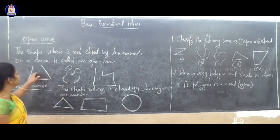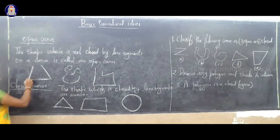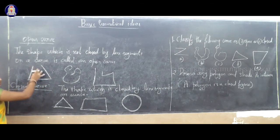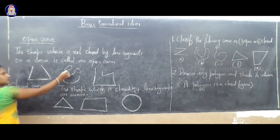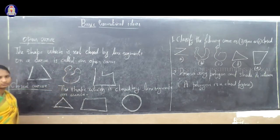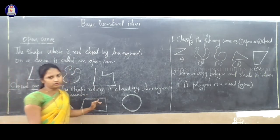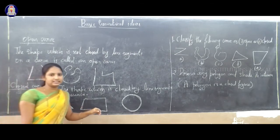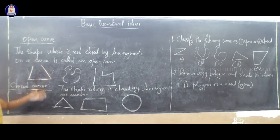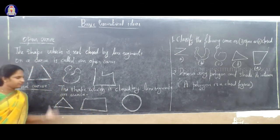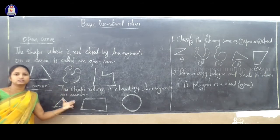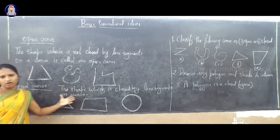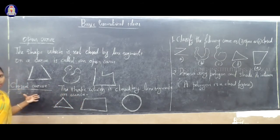But open figure — here we use line segment but the figure is not closed. This curve is not closed. The shape which is not closed by line segment or curve is called open curve. The shape which is closed by line segment or a curve is called a closed curve.